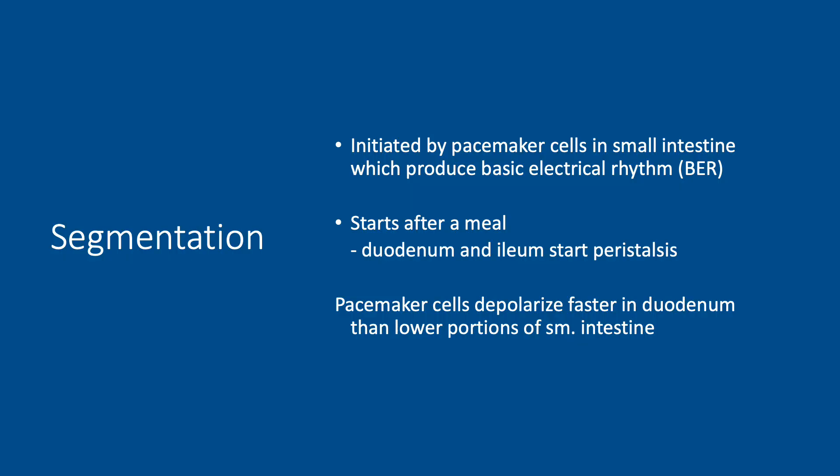The contractions of segmentation are initiated by the basal electrical rhythm, or BER — those rhythmic depolarizations — which are the product of the pacemaker cells, specifically the interstitial cells of Cajal. If the basal electrical rhythm hits threshold, segmentation contractions begin. The intensity can be influenced by things like gastrin or nerve activity. Segmentation is pretty vigorous directly after a meal, and the duodenum and the ileum start to segment simultaneously when that meal first enters the small intestine.